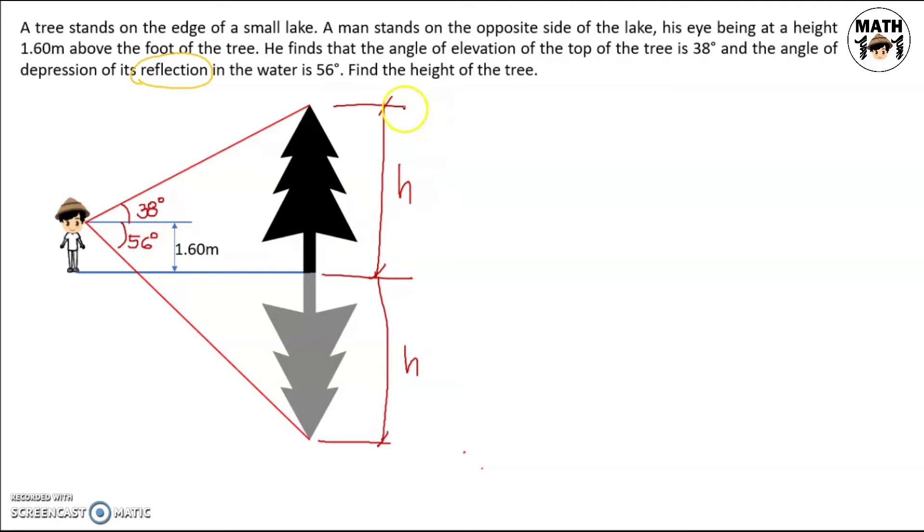How do we solve for the height of the tree? Notice we can make a triangle here with the hypotenuse, this height, and this horizontal distance. Since we don't know the horizontal distance, let's call it x.